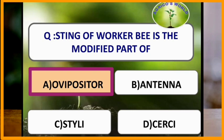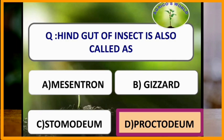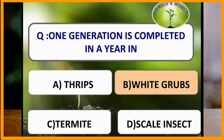The hindgut of an insect is also called proctodeum, the foregut is called stomodeum, and the midgut is called mesenteron. Which of the following pest takes one year to complete one generation?